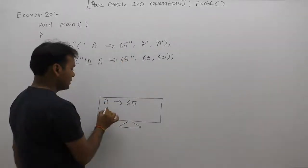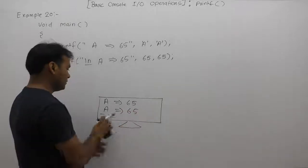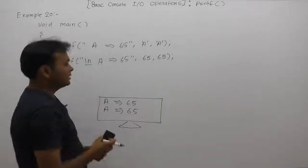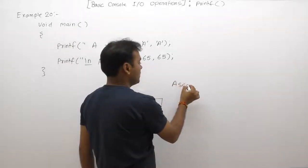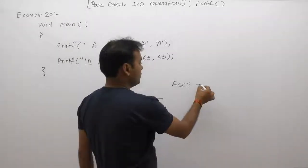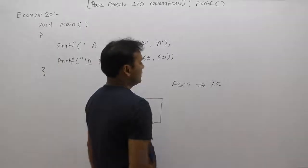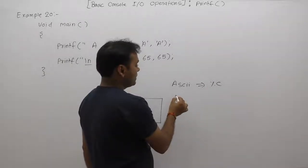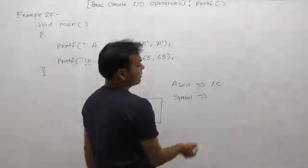Then again, output is same. A arrow 65. This is why, if some characters are available in their ASCII value format or if any character is available in symbolic representation.